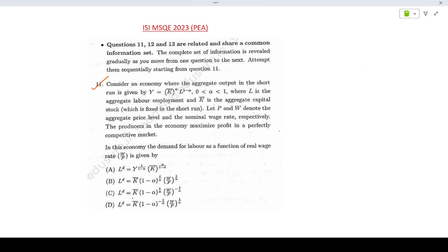Consider an economy where the aggregate output in the short run is given by y equals k bar to the power alpha, l to the power 1 minus alpha. L is aggregate labor employment, k bar is the aggregate capital stock. Let P and W denote the aggregate price level and the nominal wage rate respectively. The producers in the economy maximize profit in a perfectly competitive market. In this economy, the demand for labor as a function of real wage W by P is given as...